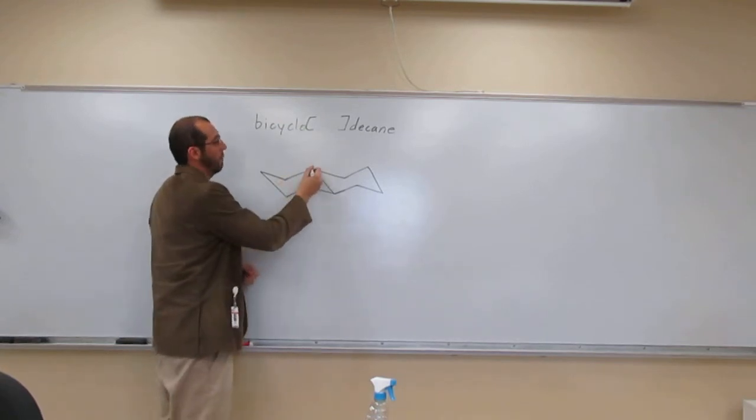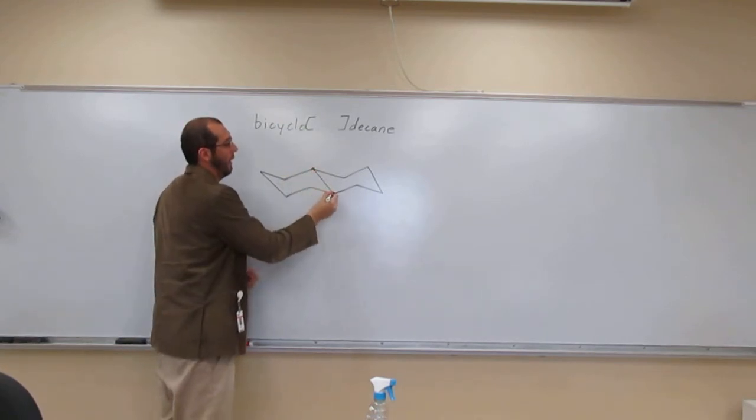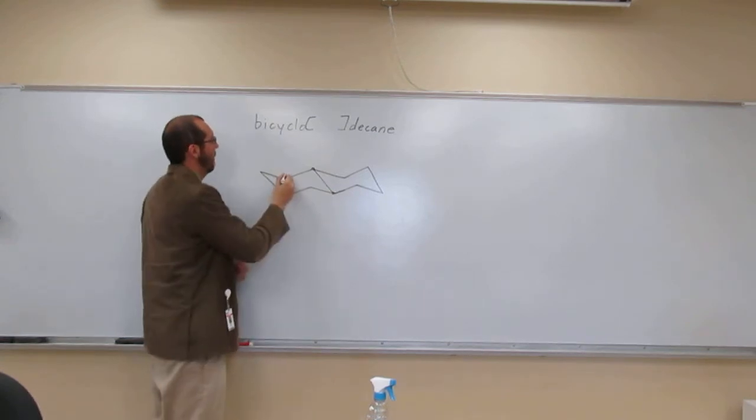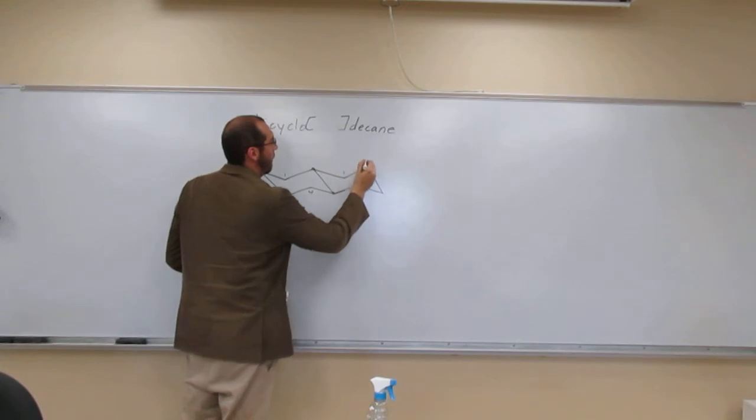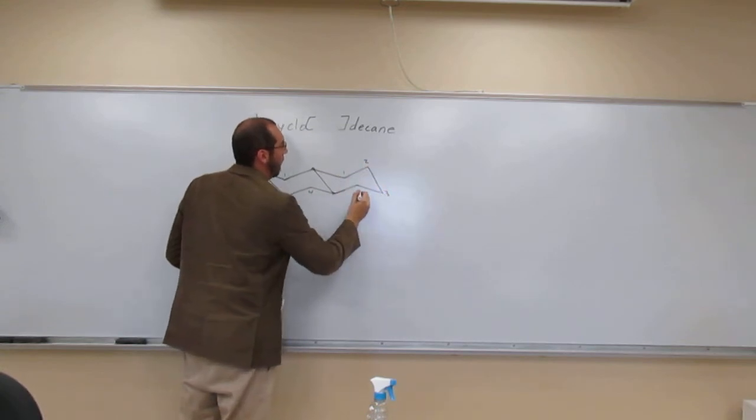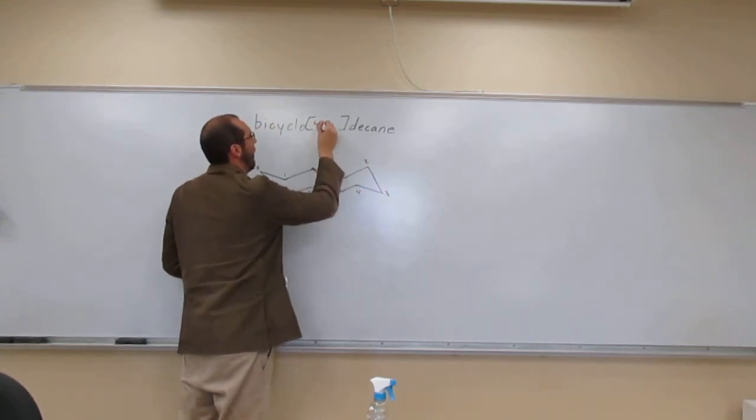So let's count them. So the bridgeheads are here and there. Am I correct? Yes. Okay. One, two, three, four. And one, two, three, four. So we put four dot four.